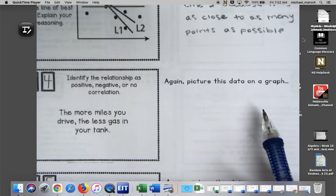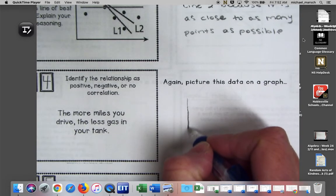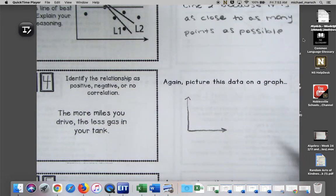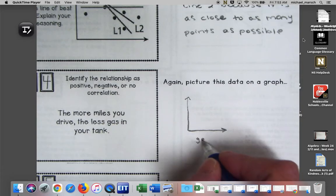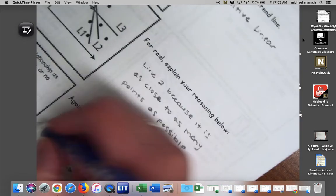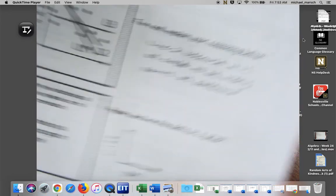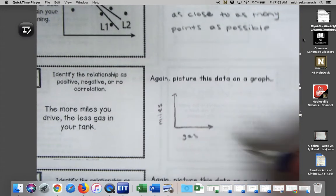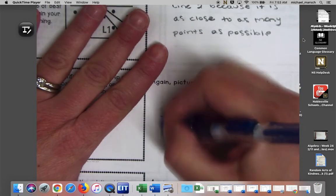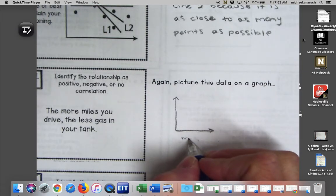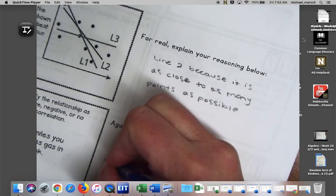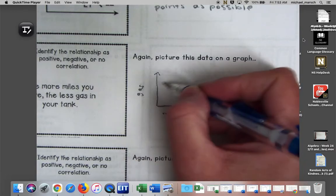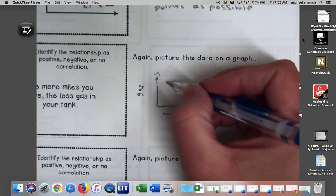Number 14, identify the relationship as positive, negative, or no correlation. I gave you guys the hint to picture this data on a graph. If I were to draw a graph of this, the more miles you drive, the less gas in your tank. This would be gas and this would be miles. If you think about it, when I get in my car and I'm driving, this should be miles and this should be gas.